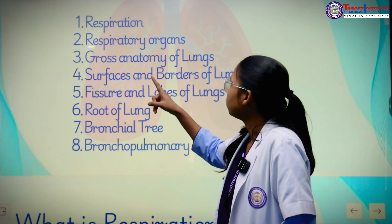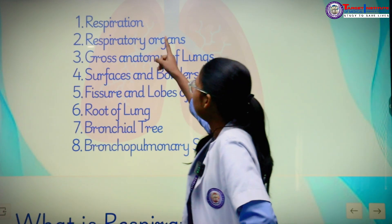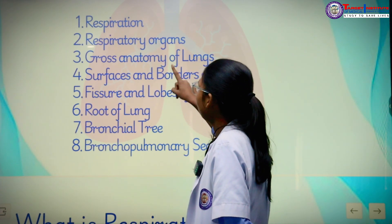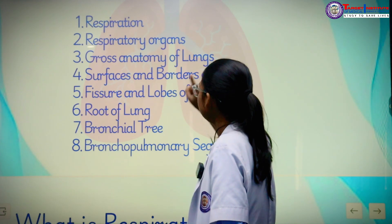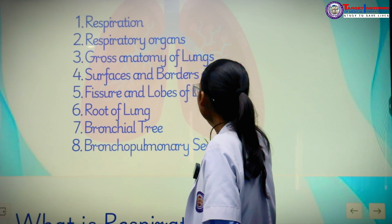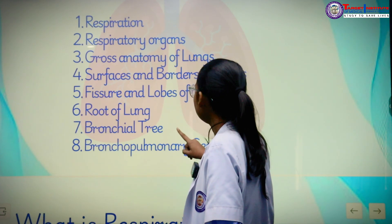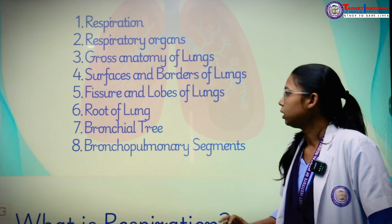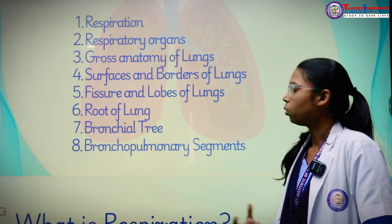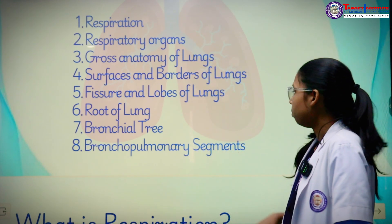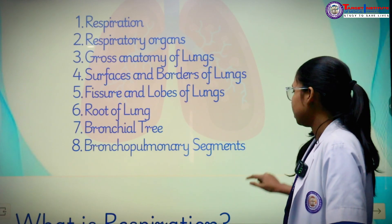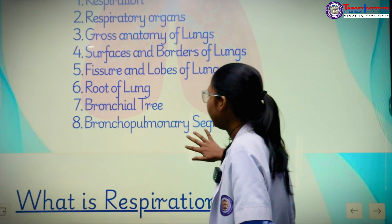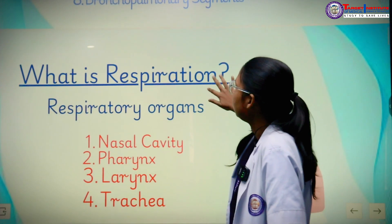Let's look at the content of the presentation. First I will cover respiration, then the respiratory organs, then the gross anatomy of the lungs, then the surface and borders of the lungs, then the fissures and lobes of the lungs, then the root of the lungs, then we explore the bronchial tree, then the bronchopulmonary segment.